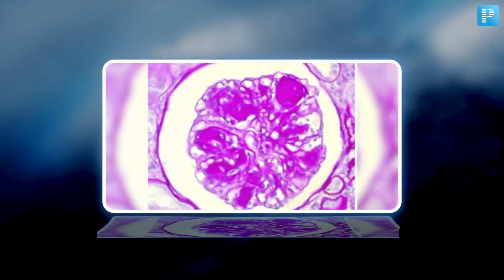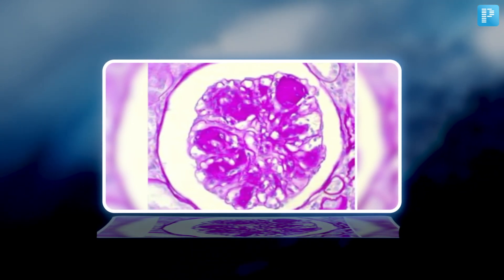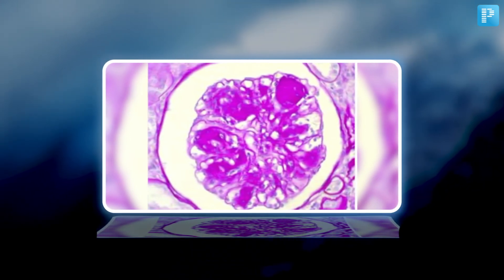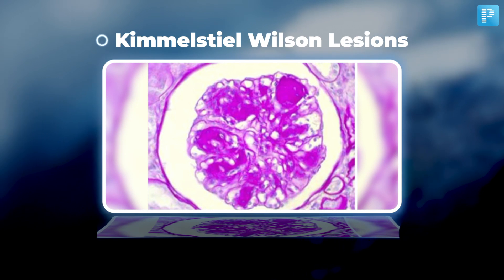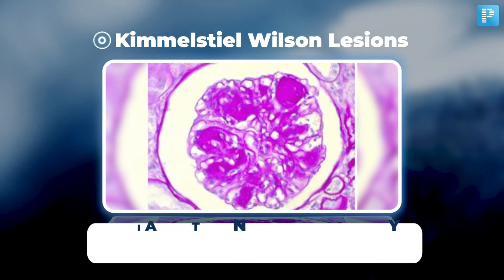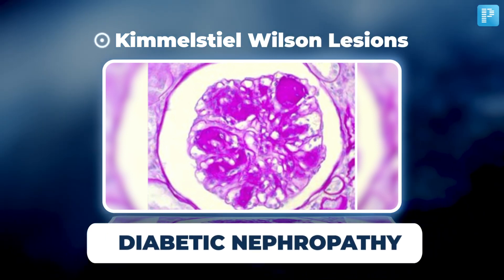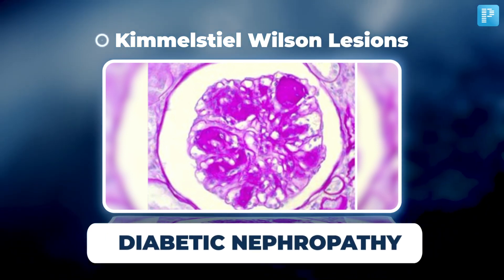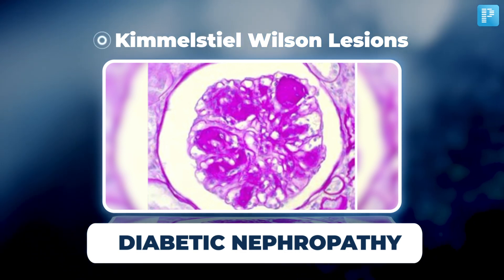Here comes image number 4. Pay close attention. What can you see in this image that points to a condition related to the Kimmelstiel-Wilson lesion? This is diabetic nephropathy, characterized by the Kimmelstiel-Wilson lesion. You are doing fantastic.